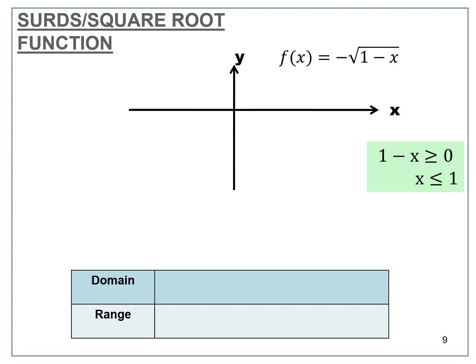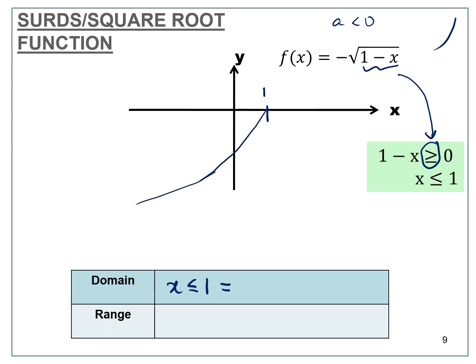For f(x) = -√(1 - x), we take 1 - x ≥ 0 and solve to get x ≤ 1, which is the domain. Since a is less than 0, the graph is reflected downward. When x = 1, y = 0, so the graph starts at x = 1 going downward to the left. The domain is (-∞, 1] and the range is y ≤ 0, or (-∞, 0].